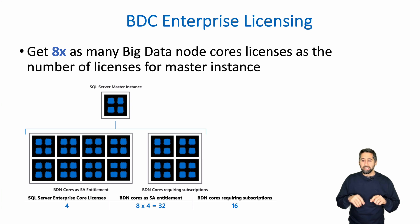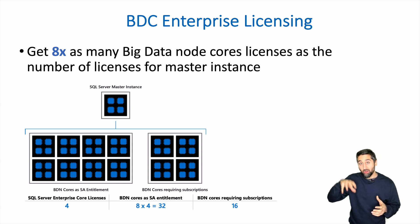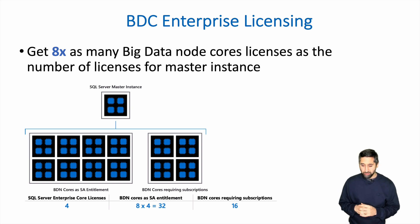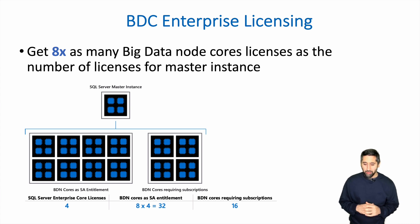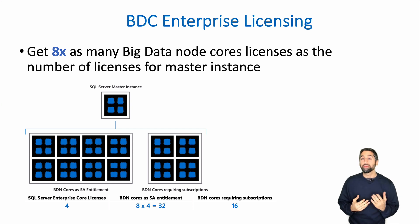Let's take the example of Enterprise Edition for big data clusters. You get eight times as many big data node core licenses as the number of cores you have licensed on the master instance. As shown in this image — taken from the licensing guide for SQL Server 2019 — the master instance has four cores. So on the lower left-hand side you see SQL Server Enterprise core licenses: four. Four times eight equals 32 cores.